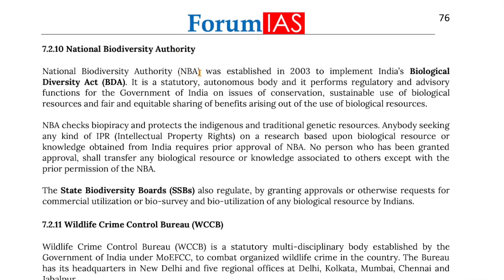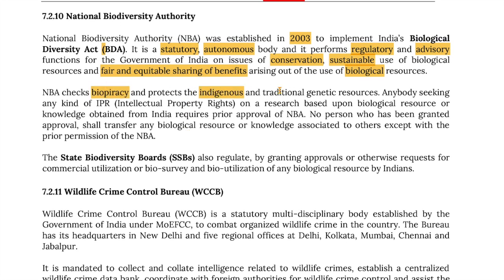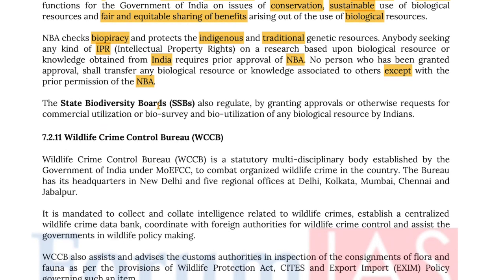The National Biodiversity Authority (NBA) was established in 2003 to implement India's Biological Diversity Act. It is a statutory autonomous body that performs regulatory and advisory functions for the Government of India on issues of conservation, sustainable use of biological resources, and fair and equitable sharing of benefits arising out of the use of biological resources. NBA protects against biopiracy by protecting indigenous and traditional genetic resources. Anybody seeking any kind of IPR on research based on biological resources or knowledge obtained from India requires prior approval of the NBA. No person who has been granted approval shall transfer any biological resource or knowledge associated to others except with the permission of NBA. State Biodiversity Boards regulate by granting approvals or otherwise for commercial utilization of biosurveys and bio-utilization of any biological resources by Indians.